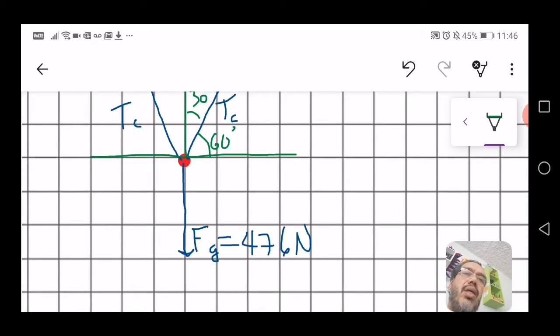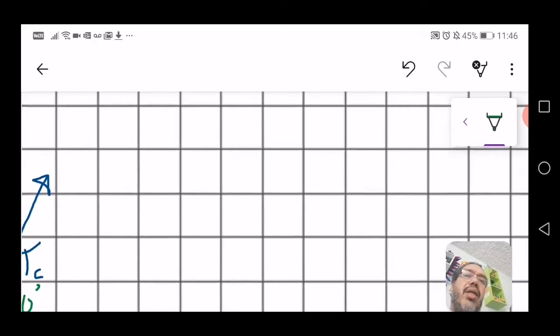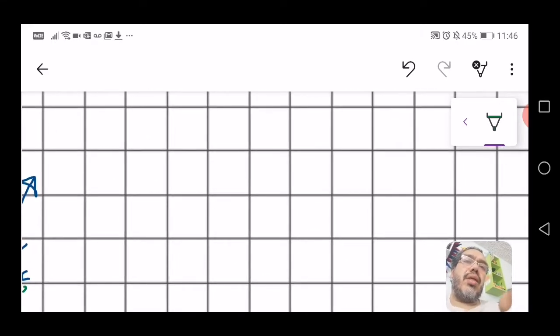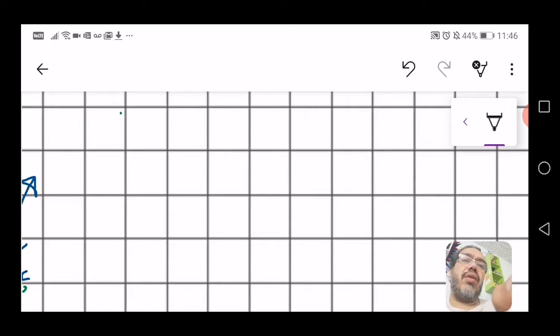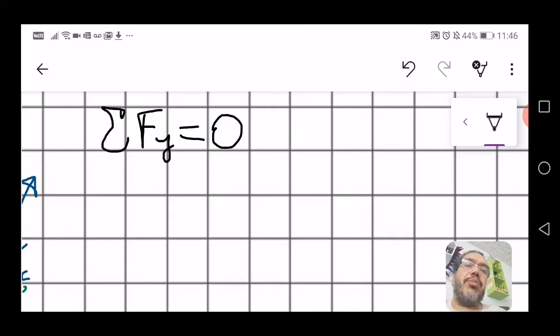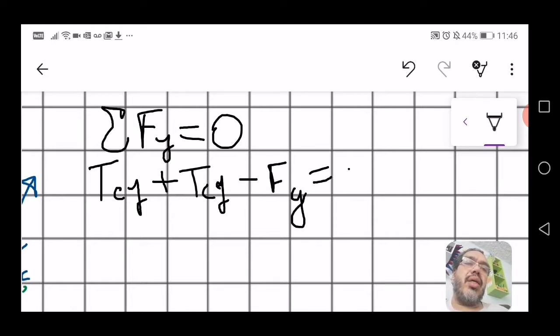And therefore, you can easily see that your equation for the y direction should give you the answer for this. So, the sum of forces in the y direction is equal to zero, which means that tension in the y direction plus tension in the y direction minus the weight is equal to zero.